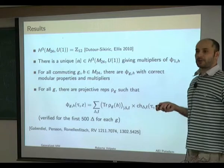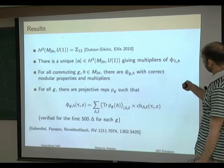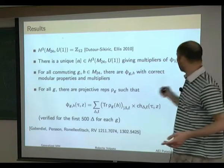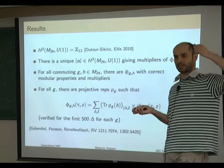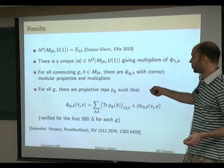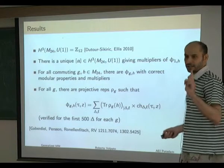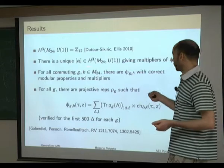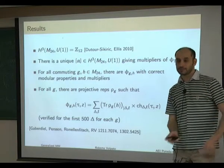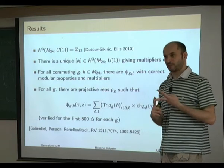The first thing to do is check which cohomology class is the relevant one for our problem. We already know the twining genera, and some of them have non-trivial multipliers. We can check if there is a cohomology class that reproduces exactly these multipliers for the twining genera. There is a unique class of order 12 — a generator of Z12 — which gives exactly the right multipliers. Now that we have identified the class, we can compute all multipliers for the twisted twining genera, determine which projective representations are involved, and determine the phases under conjugation.